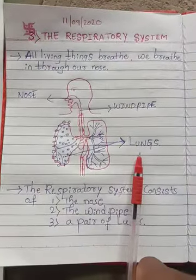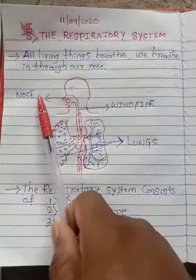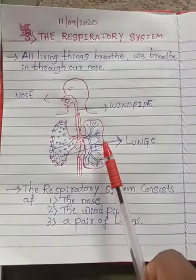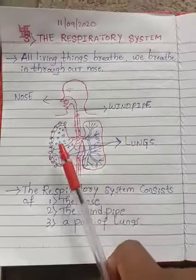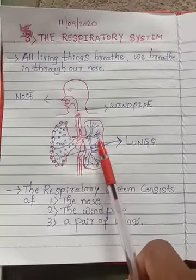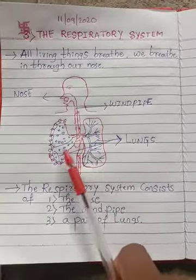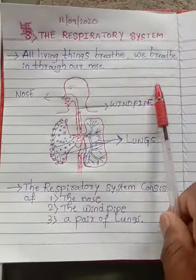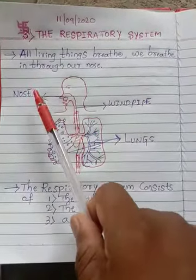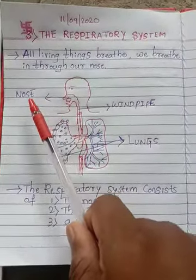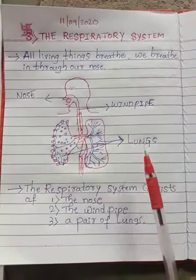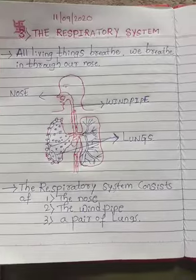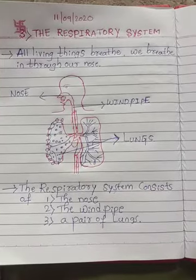Keep in your mind, students: the organs of the respiratory system are the nose, windpipe, and lungs. How many lungs do we have? Two. This is one lung, and this is the other lung — these are two lungs. So these are the organs of the respiratory system: nose, windpipe, and lungs.